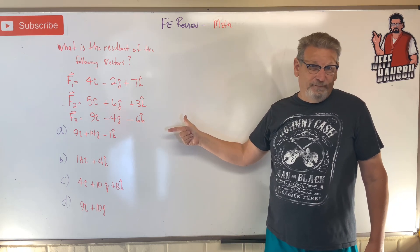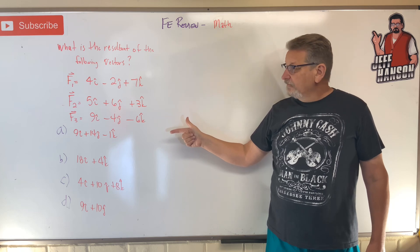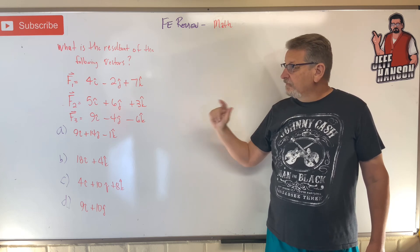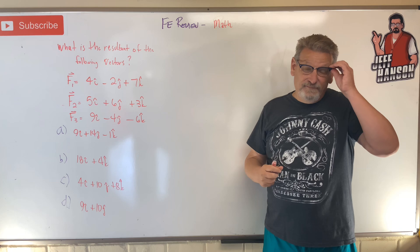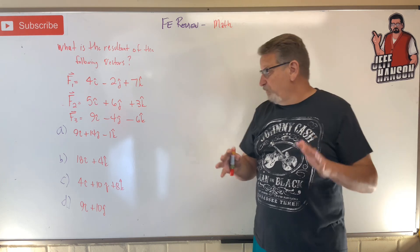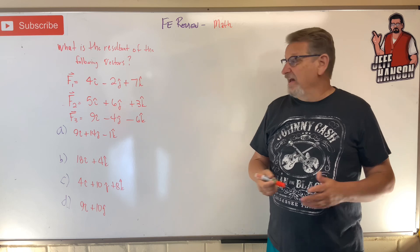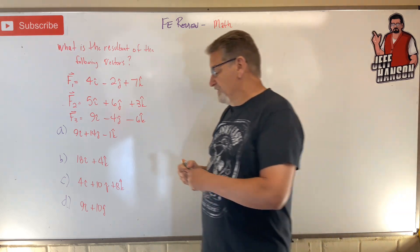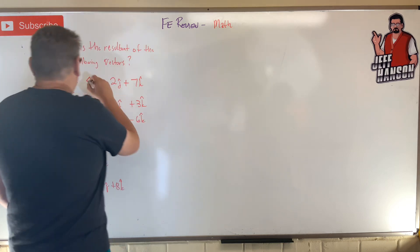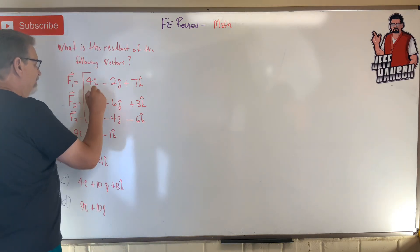Ready, set, go. Alright, are you back? World's easiest problem here, right? All you have to do is remember how you add vectors together and it's like adding apples to apples and oranges to oranges and grapes to grapes, right? We're going to add this column together.